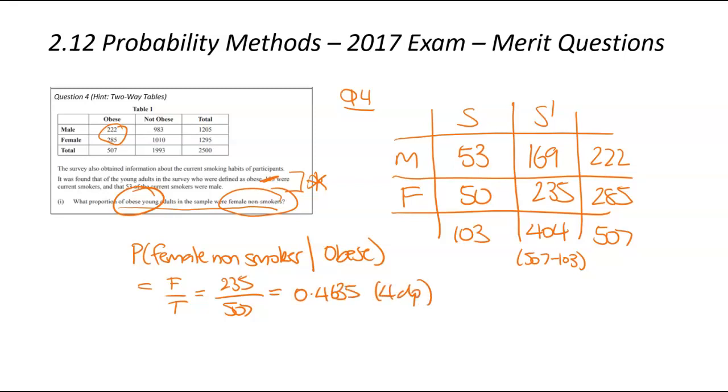They're the only ones we're interested in. Of those 507, how many were female and non-smokers? That's that 235 in that group there. So that there is 235. Plug that into your calculator. Hopefully, you're going to get 0.4635, and again, that had my 4DP rounding. So pretty challenging merit question. The idea of needing to redo another two-way table. It's a very tricky idea.